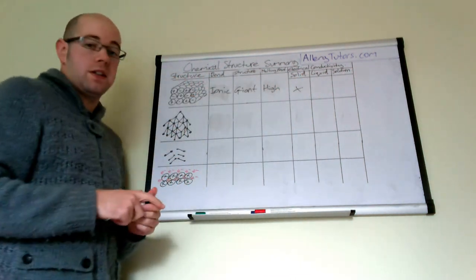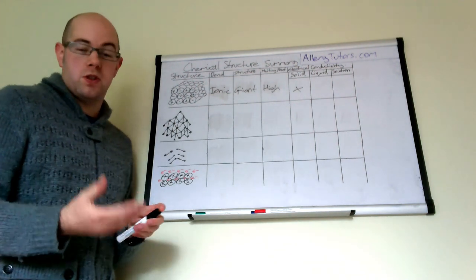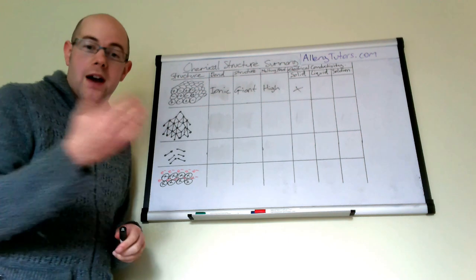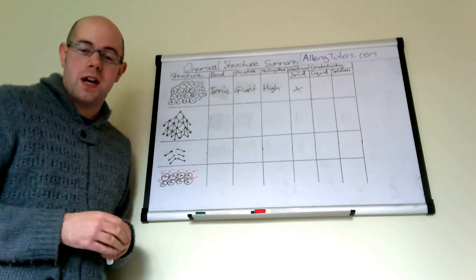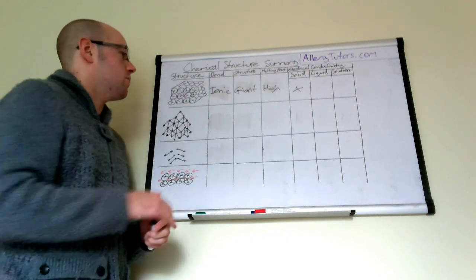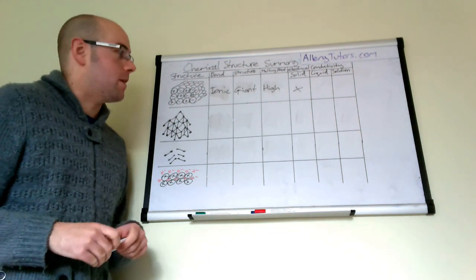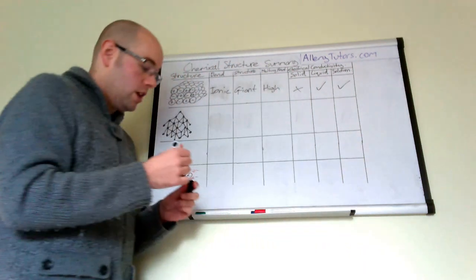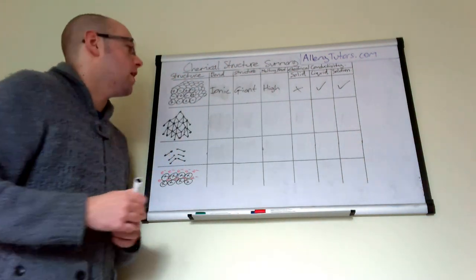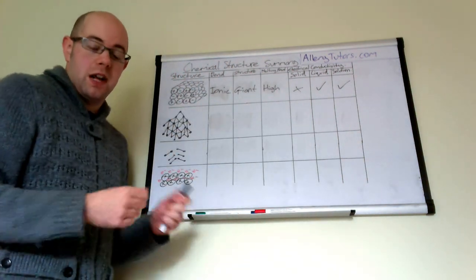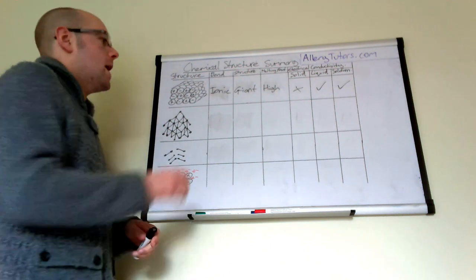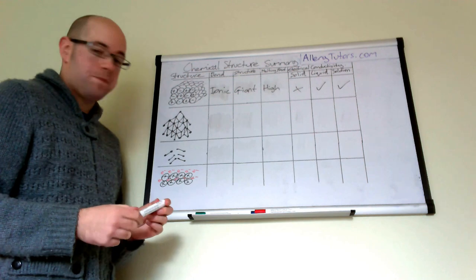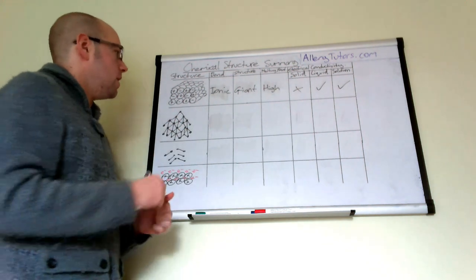Electrical conductivity — ionic compounds are not very good at conducting electricity when solid, because the ions are fixed in position. For something to conduct electricity you need free ions or free electrons, and neither exist in solid ionic compounds. But when you melt them or dissolve them in solution, they will actually conduct electricity, because the ions are free to move around.